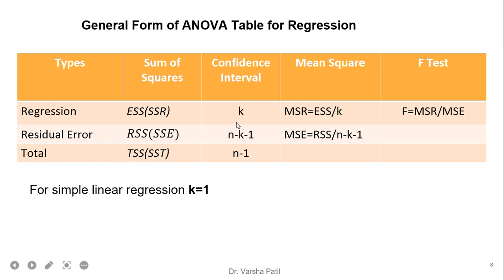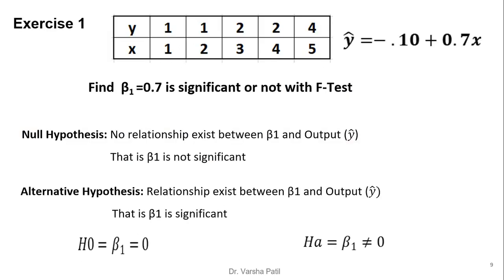To summarize the notation: K is the number of independent variables, N − K − 1 is the degrees of freedom for the error, and N − 1 is the total degrees of freedom. We first find MSR, then MSE, and F = MSR / MSE. For simple linear regression, K = 1. These concepts will become clear when we work through an example.